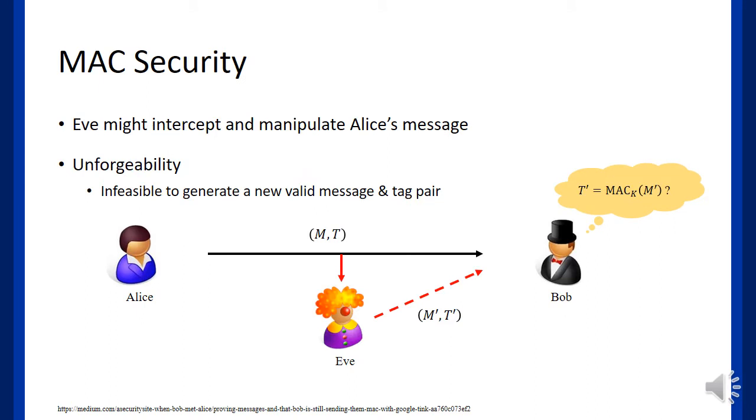And we call nonce-based MAC if the MAC receives a unique value nonce with the message. What is MAC security? Assume that an adversary exists which can intercept and manipulate the message. Then the new message and tag pair may not be consistent with the MAC algorithm. So Bob can notice the message does not send by Alice. To capture this situation, MAC should have unforgeability to be secure. If a MAC has unforgeability, it is infeasible to generate a new valid message and tag pair.